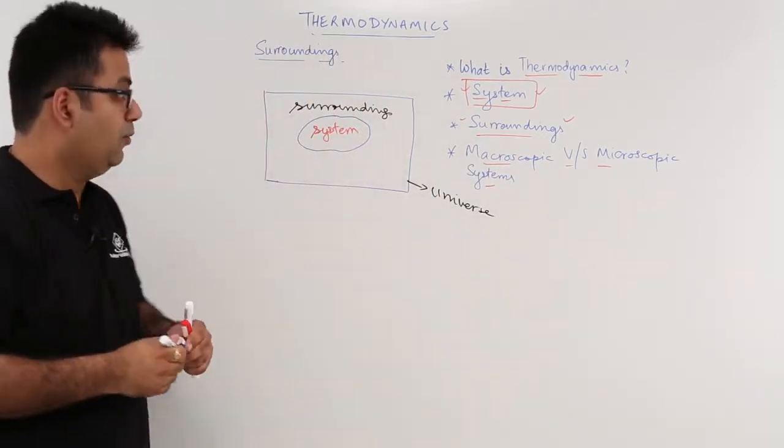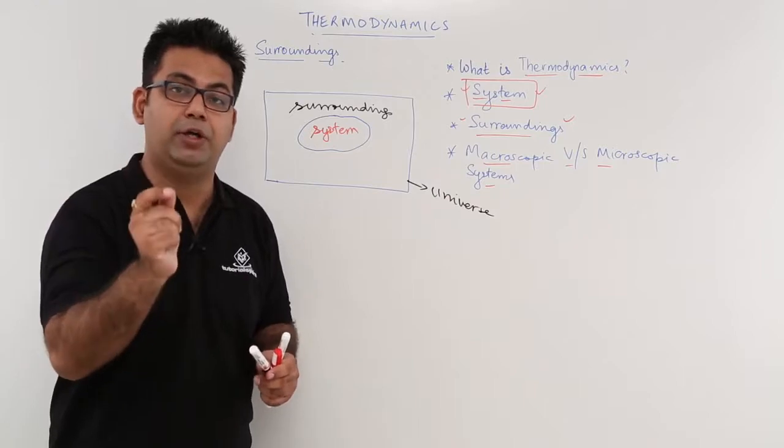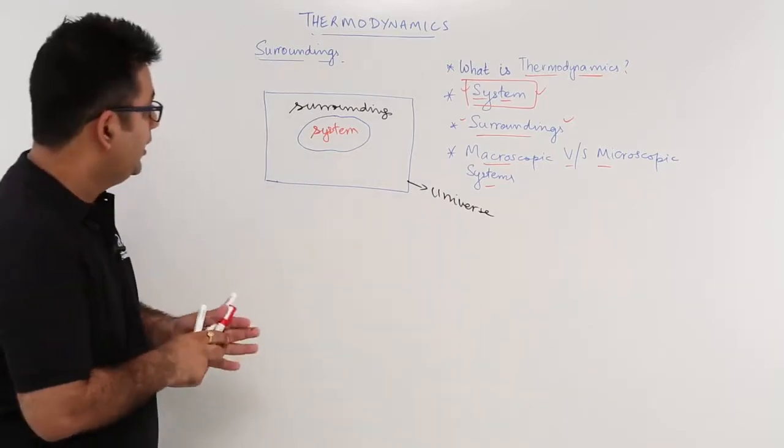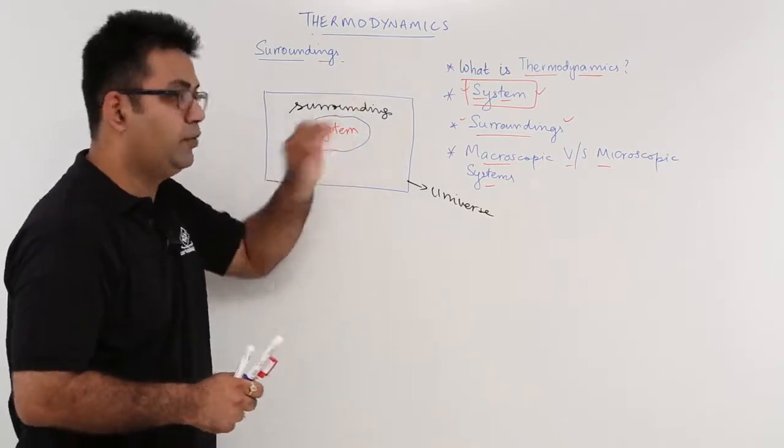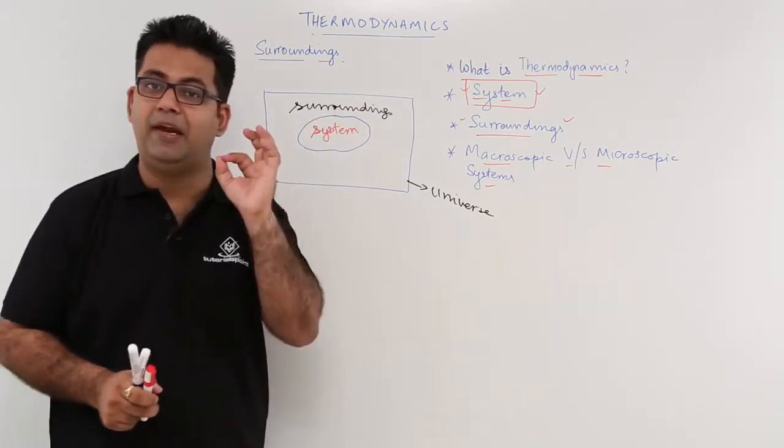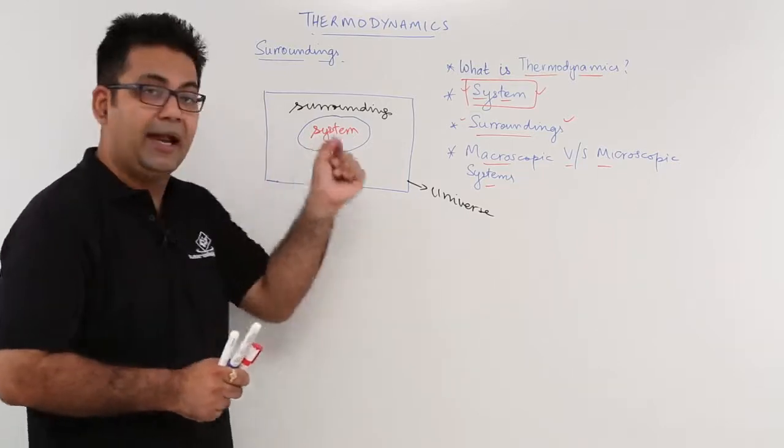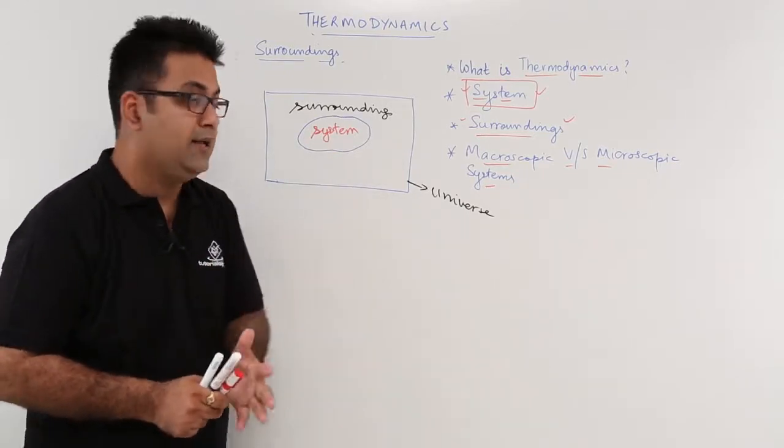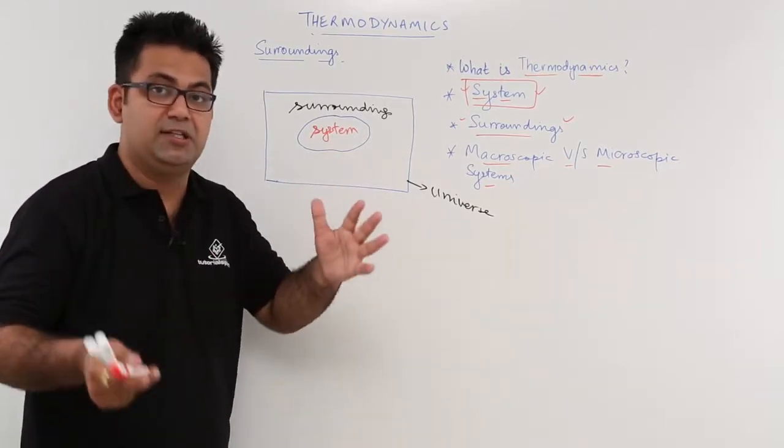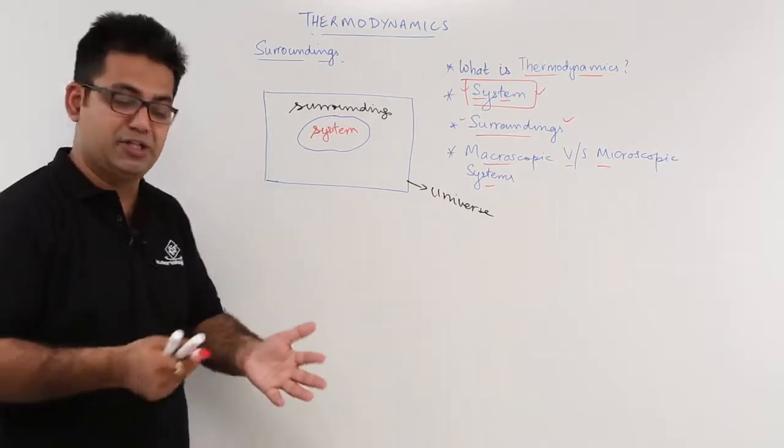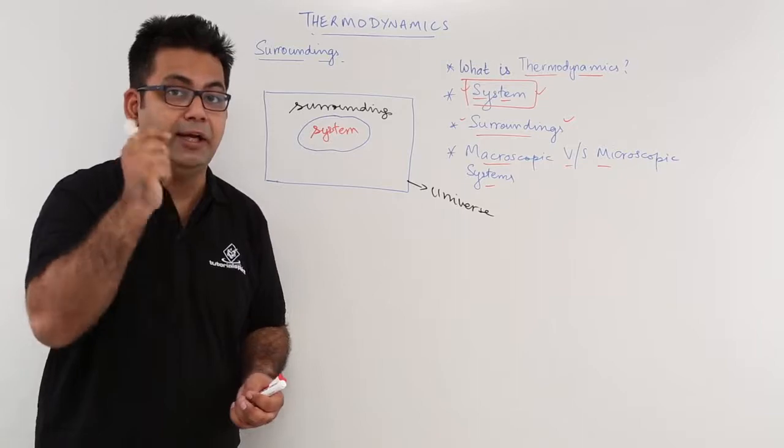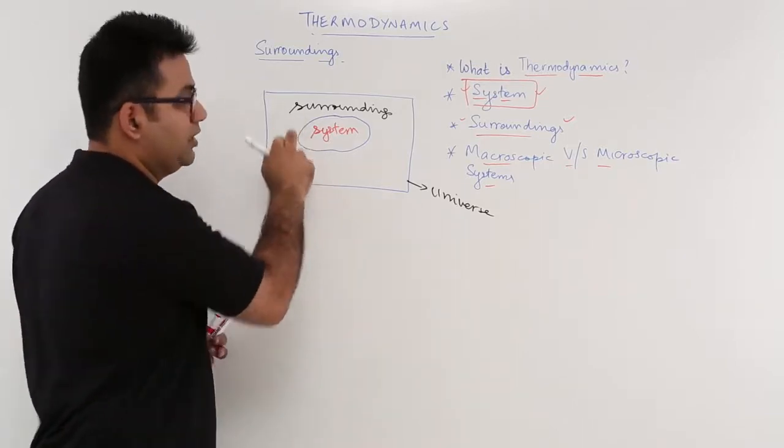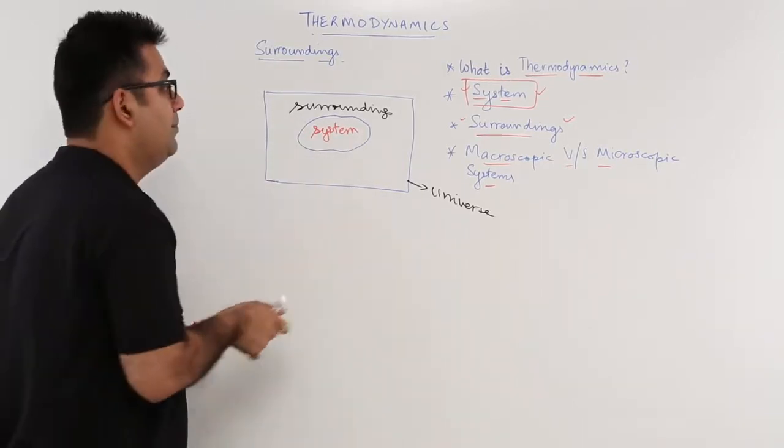Now, a very important point to note down. There is something which is separating a system and a surrounding. That separating line or that separating entity, I would not call it a line. Sometimes it is not a line, it is a curve or some arbitrary shape. That separation or that separating entity of system and surroundings is called the boundary.